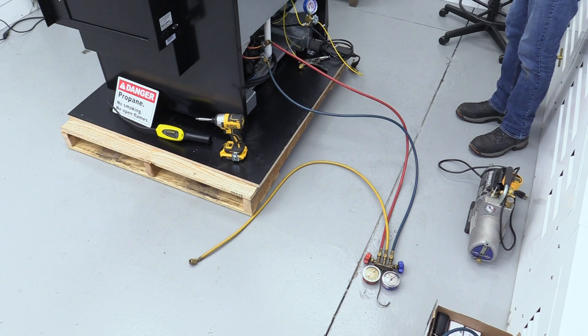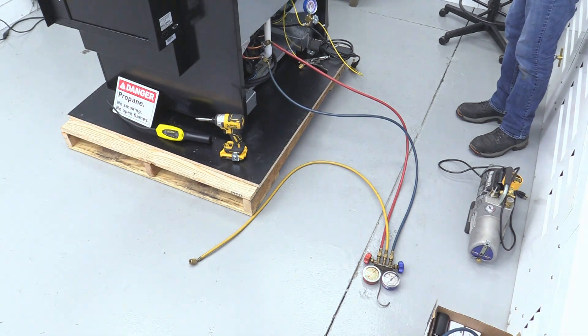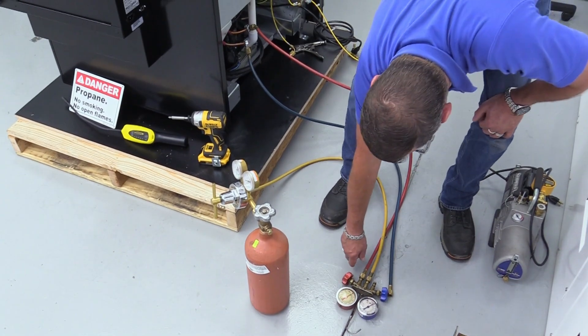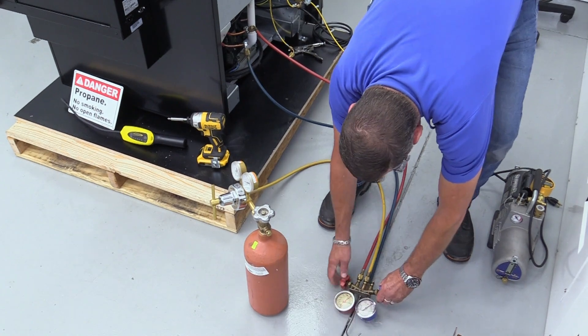If you must recover refrigerant, use an R290 approved recovery machine. Flush the system with nitrogen at 30 to 50 PSIG for a few minutes.